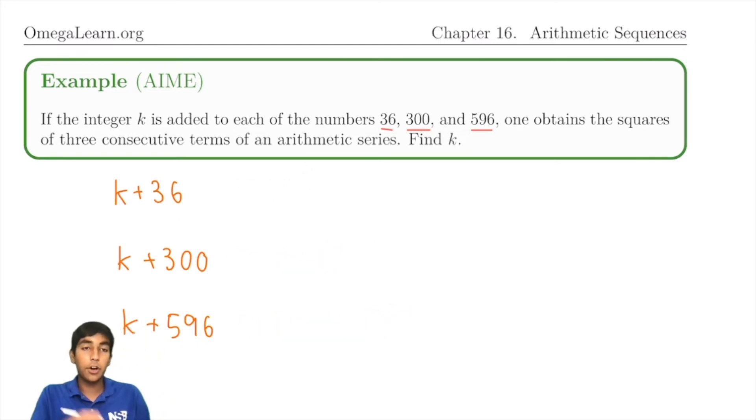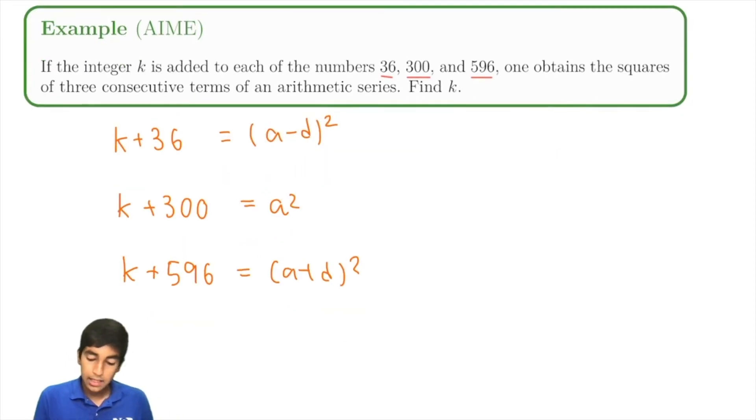Instead, this is a common trick. You always want to let the middle one be a squared. So, (a-d) squared, a squared, and (a+d) squared. It's the same thing, except now this variable shift makes it a lot easier on our part to solve the equations once we're ready. Let's expand.